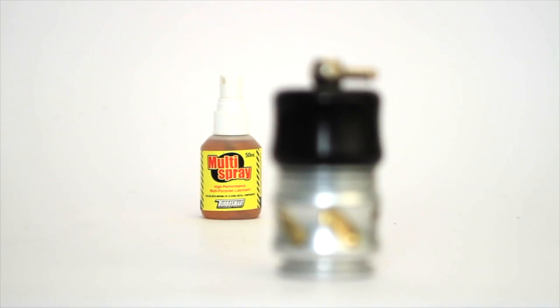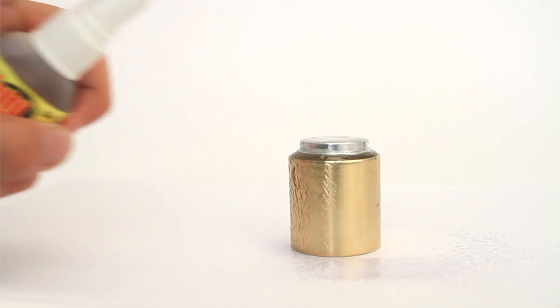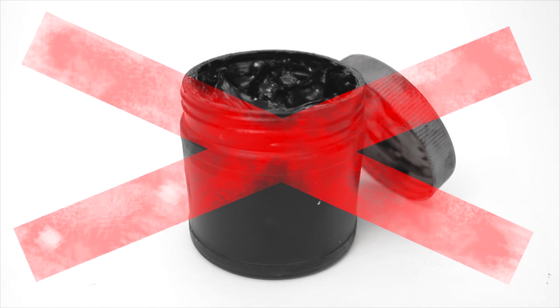Next we lubricate the bore and the piston with the Turbosmart multi spray. Uni-glide hydraulic oil or sewing machine oil are all okay to use, but do not use grease or any viscous oils.